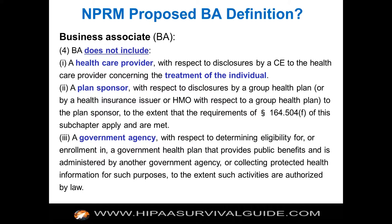Question: We had a BA contract prior to Omnibus, but the CE never sent an updated contract to include Omnibus updates. Who is responsible — the BA or the CE? Both parties are responsible. You can't have a contract unless you have both parties. Both parties could be fined — both entities are in violation if neither took responsibility for updating an outdated contract.